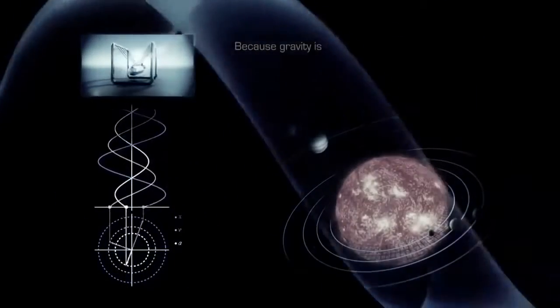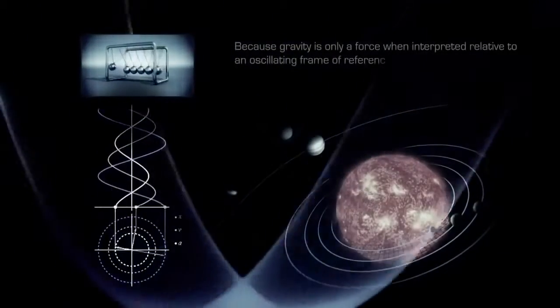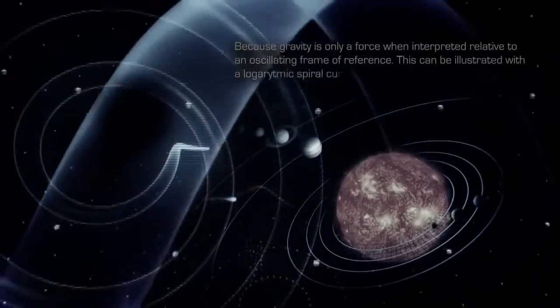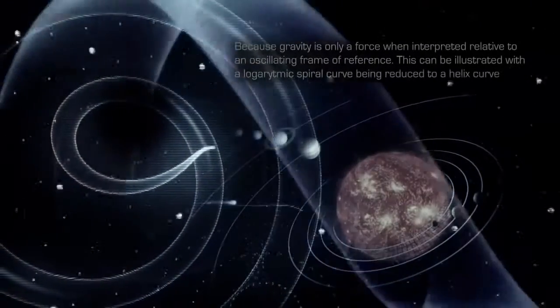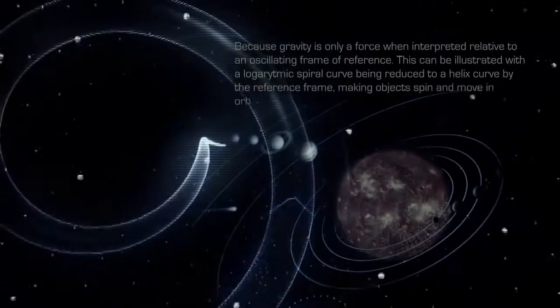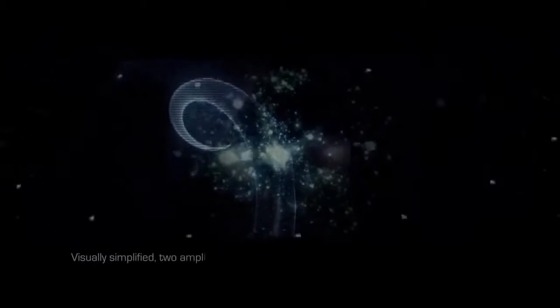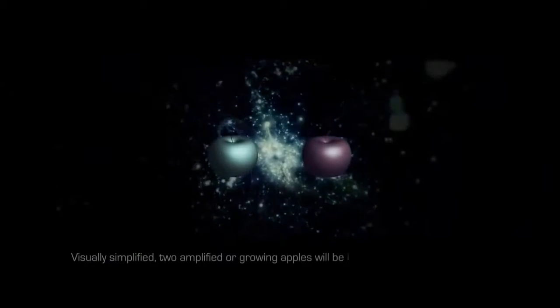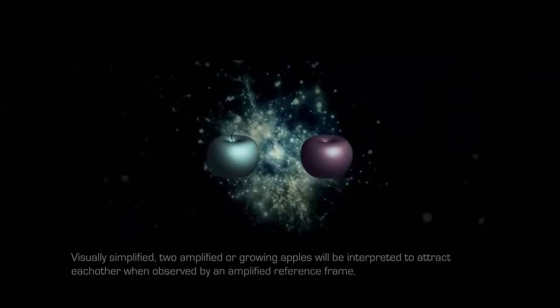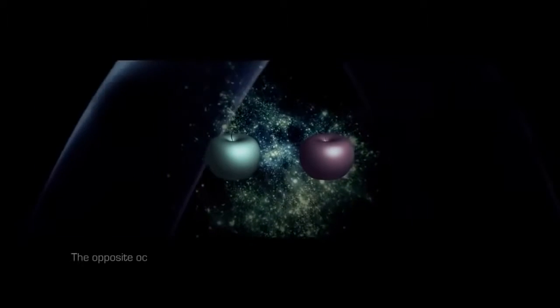Because gravity is only a force when interpreted relative to an oscillating frame of reference. This can be illustrated with a logarithmic spiral curve being reduced to a helix curve by the reference frame, making objects spin and move in orbits. Visually simplified, two amplified or growing apples will be interpreted to attract each other when observed by an amplified reference frame, as the size seems unaffected. The opposite occurs with interference.